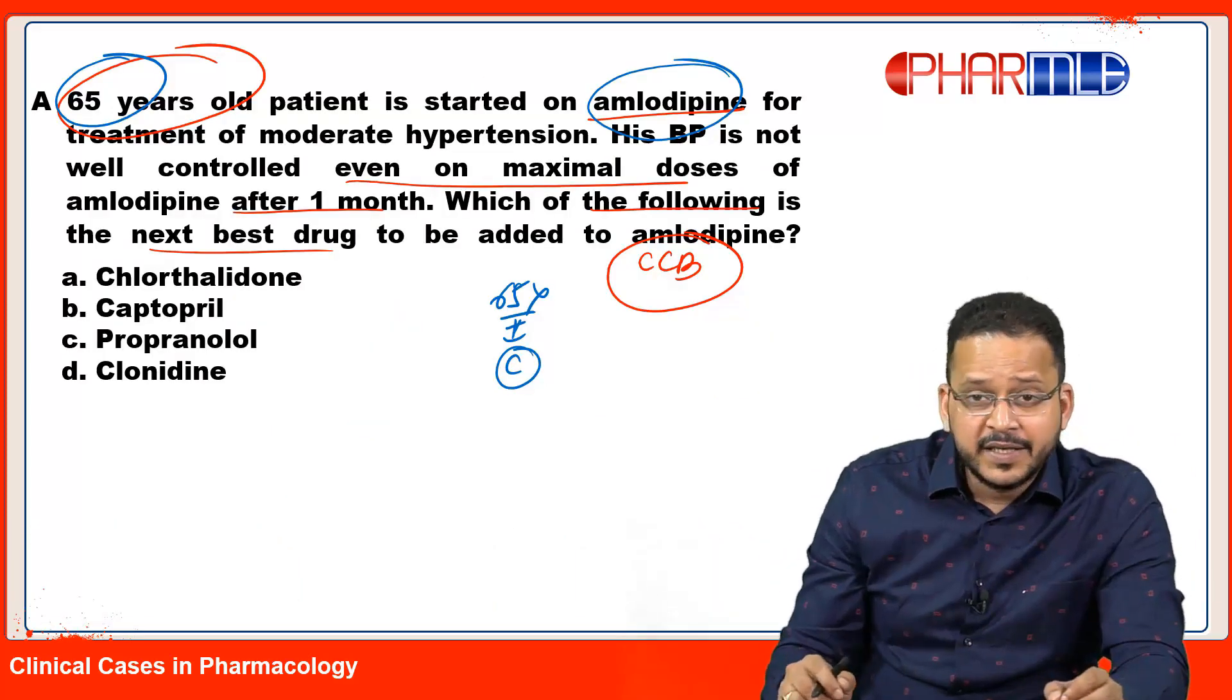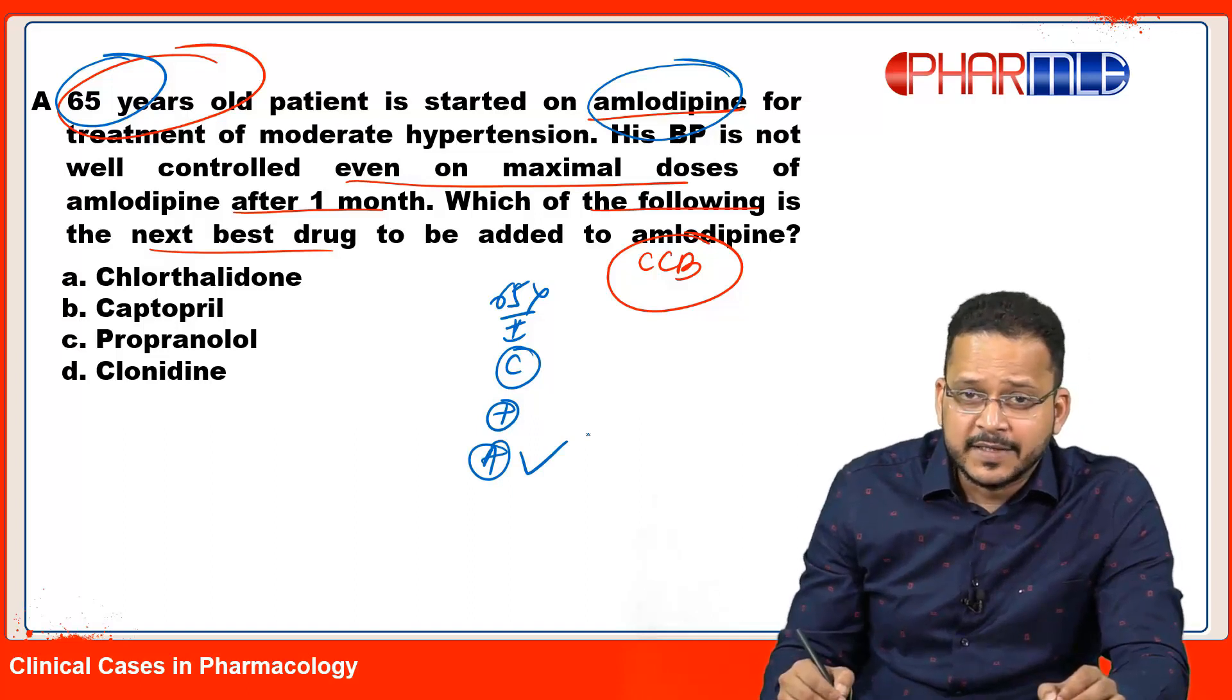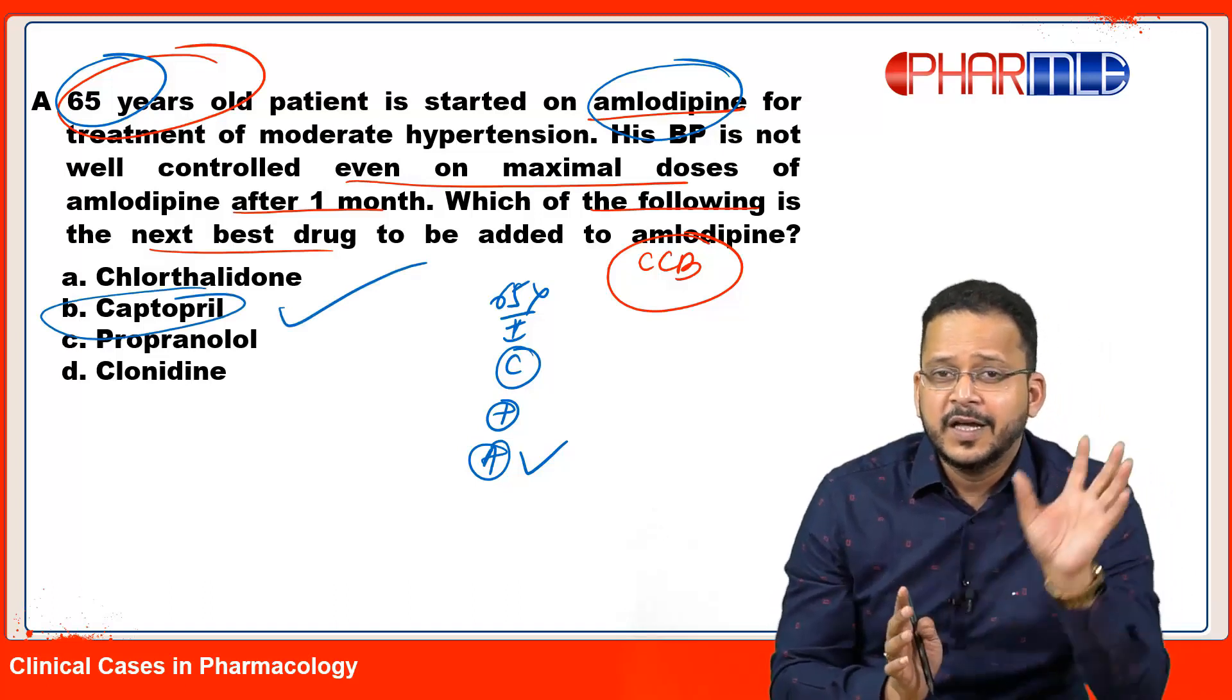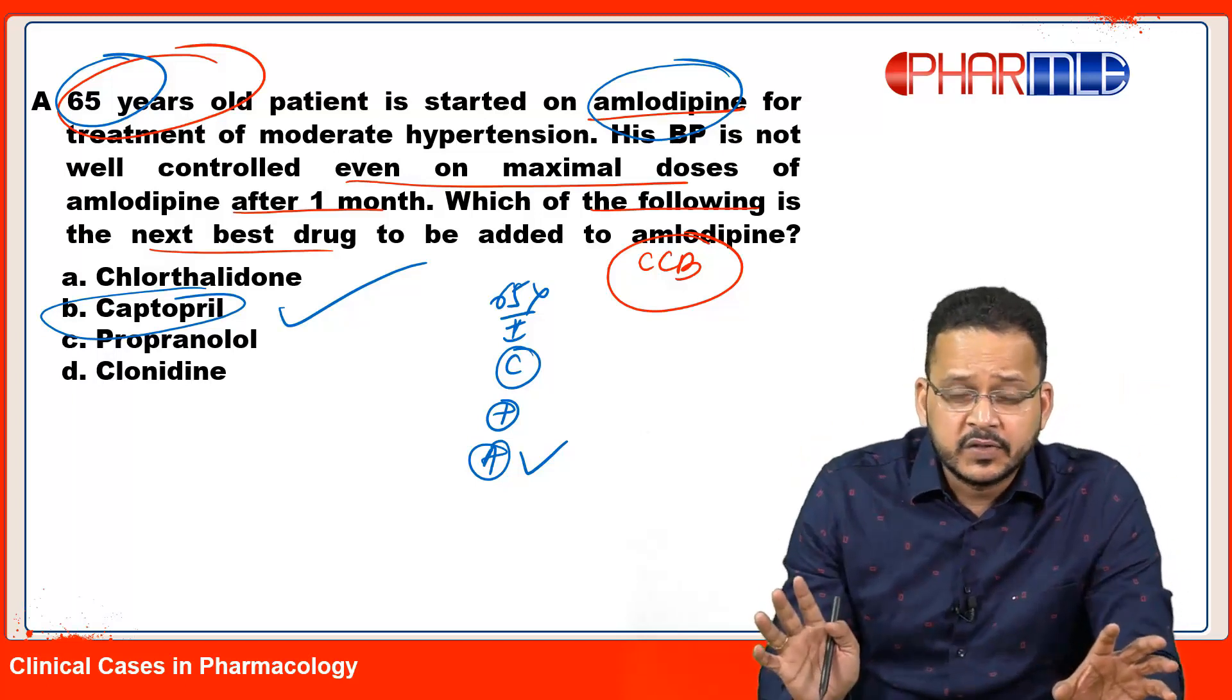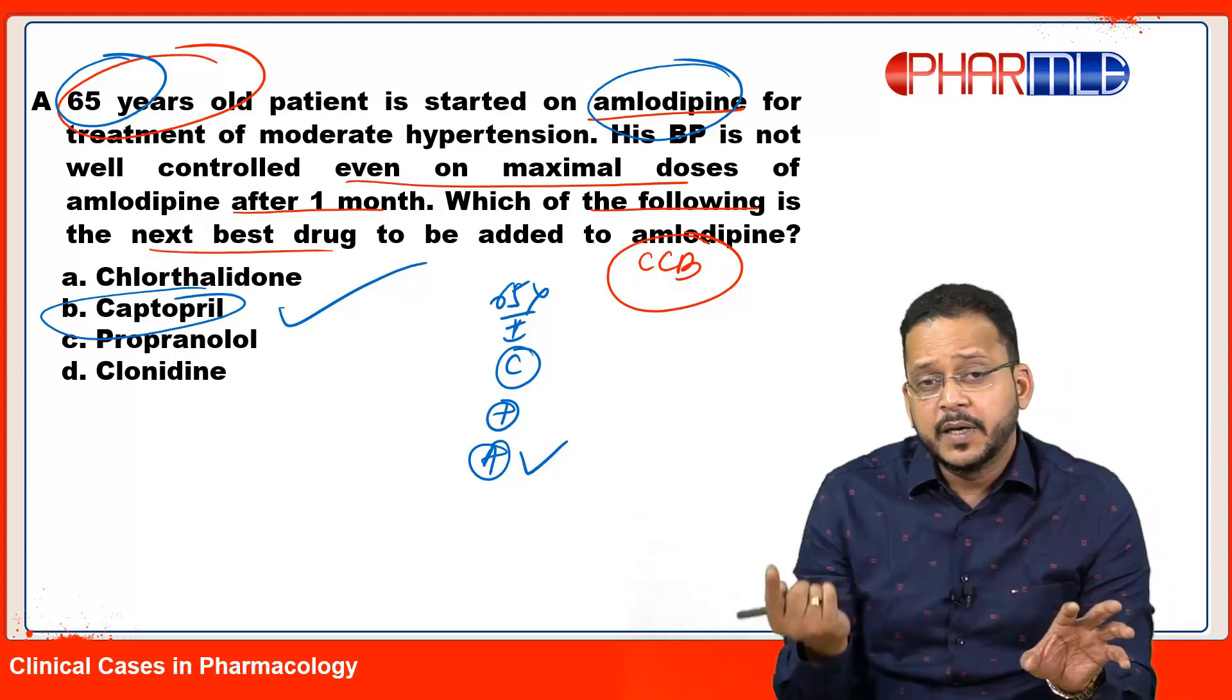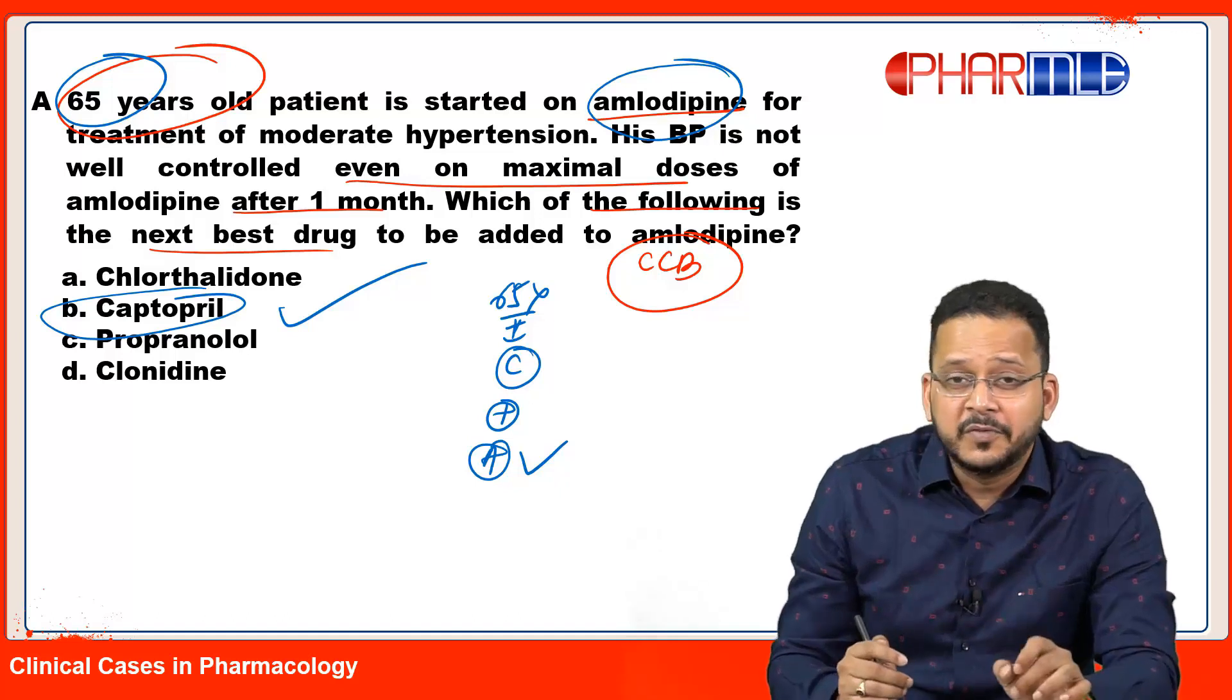So here, when the patient is not responding to your calcium channel blocker or C, what I'm going to combine here is A - that is ACE inhibitor or ARB. So your answer is captopril, not chlorthalidone. Remember the basic logic for treatment of hypertension: young patients (less than 55 years) - RAS drugs, old patients - non-RAS drugs. If not responding, combine each other. For example, patient on ACE inhibitor not responding, combine calcium channel blocker. Patient on calcium channel blocker not responding, combine an ACE inhibitor.